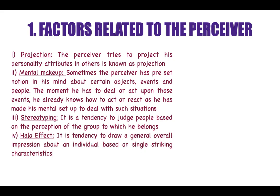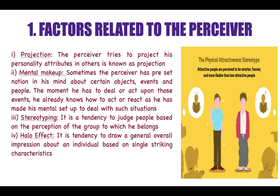The fourth factor is known as the halo effect. The halo effect is the tendency to draw a general overall impression about an individual based on a single striking characteristic. For example, attractiveness is one such characteristic — it is perceived that attractive people are smarter, funnier and more likable than less attractive people.